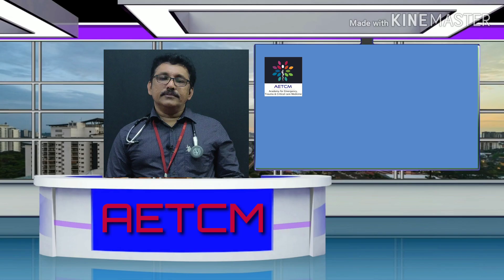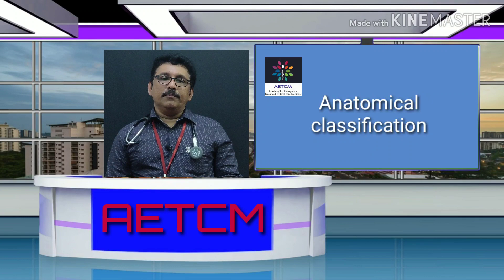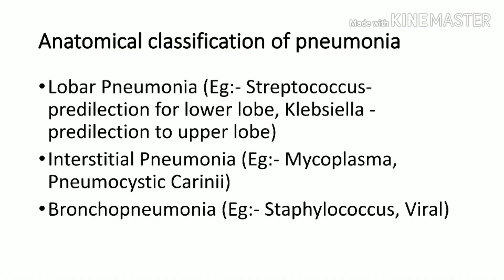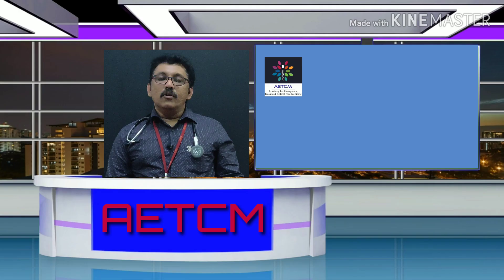Anatomically, pneumonias are classified differently. Lobar pneumonia involves one lobe of the lung — classically seen in Streptococcus, with predilection for lower lobes. Klebsiella has upper lobe predilection. Interstitial pneumonia is classically seen in Mycoplasma and Pneumocystis jiroveci, typically in HIV patients. Bronchopneumonia with bilateral extensive infiltration is classically seen in viral pneumonia.